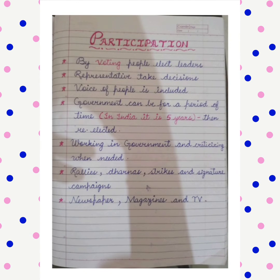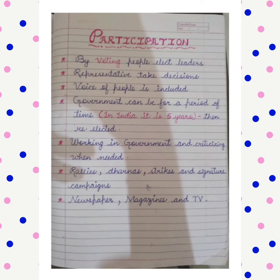The democratic government has a tenure for which it is in power. In India, the tenure is 5 years; in the United States, it is 4 years. So every 5 years in India there are elections and then re-elections. Whether the same person is re-elected or not is decided by the election process. If the people of a country are alert and interested in how the country is run, the democratic character of the government will be stronger.